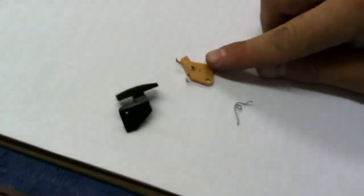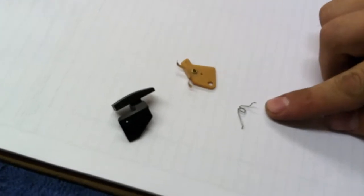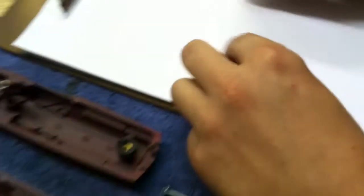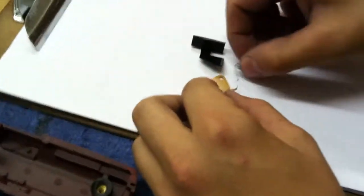You have your switch contact, the actuator arm, and the switch spring. Alright, and so they're going to sit on top of each other about like so.